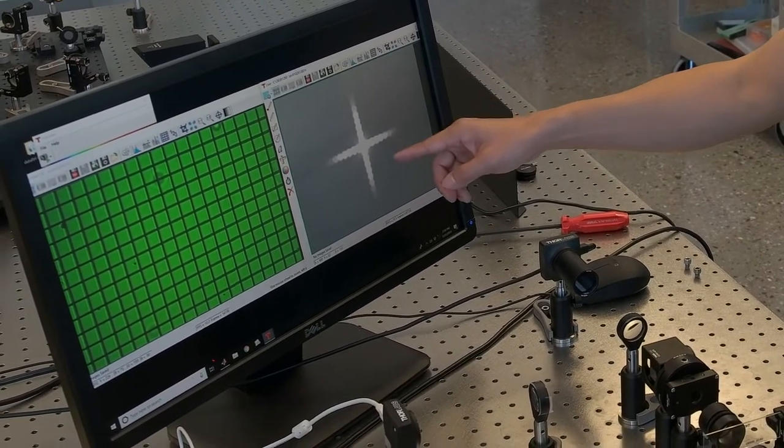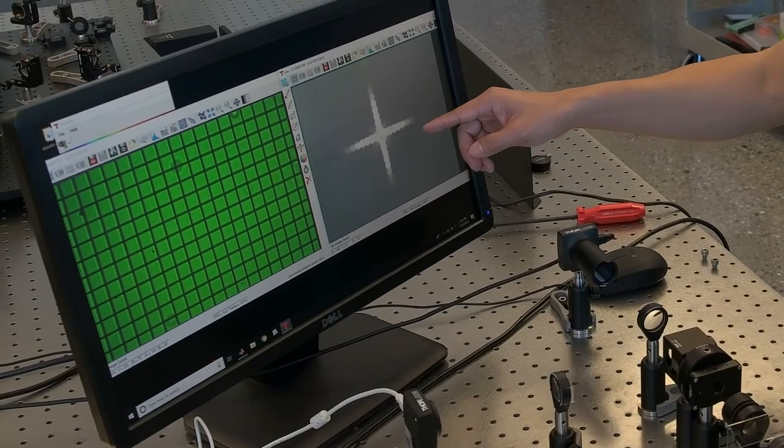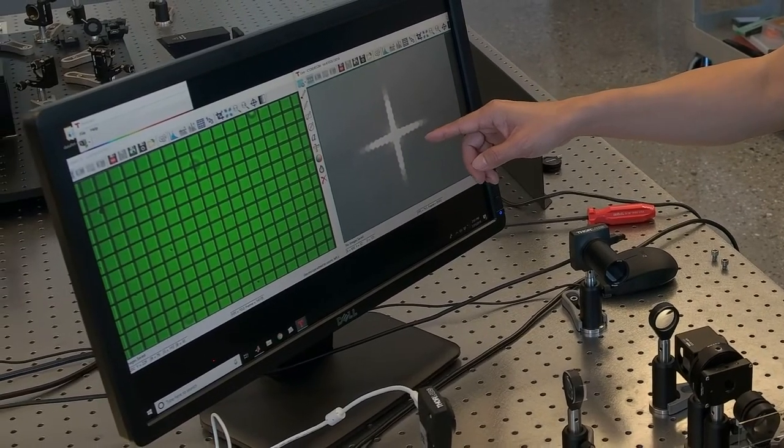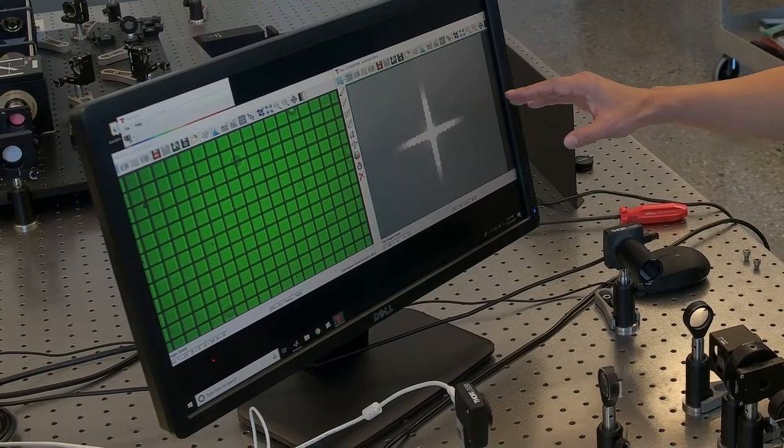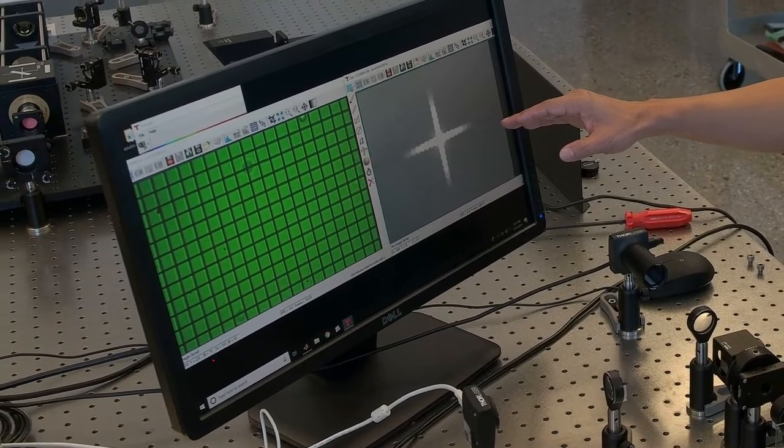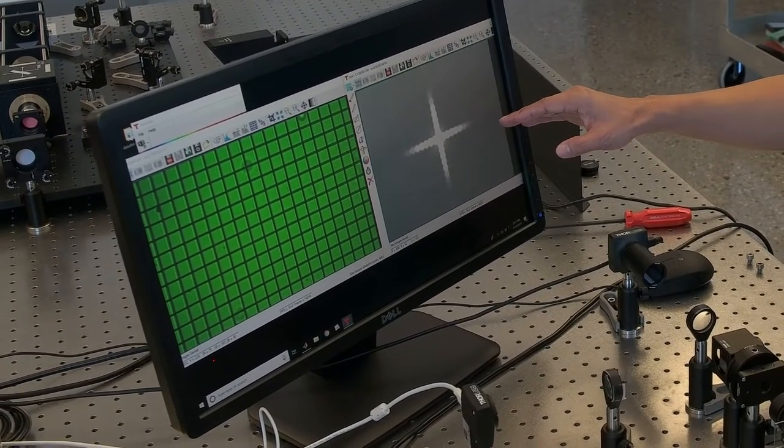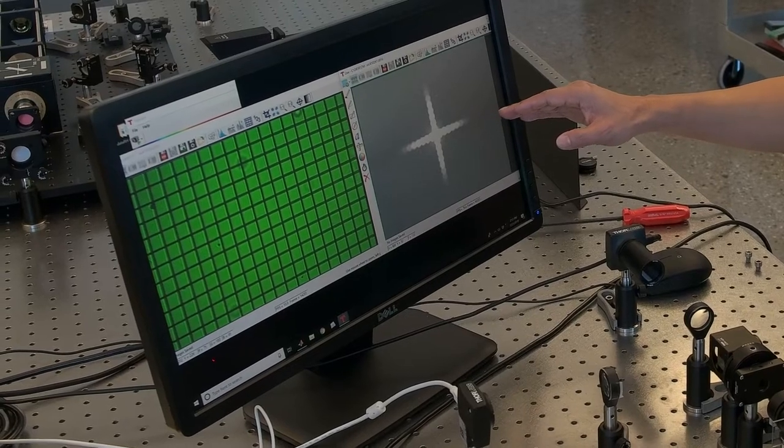The spots close to the center represent the lower diffraction orders, and those spots further away from the center represent the higher diffraction orders.